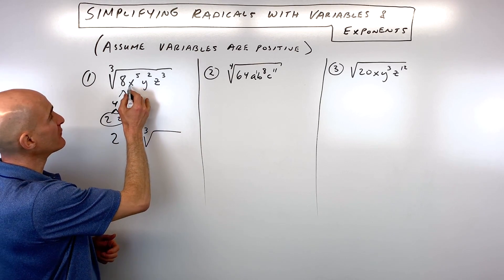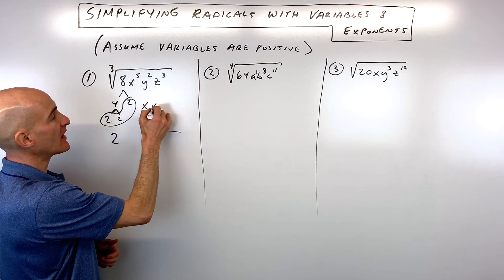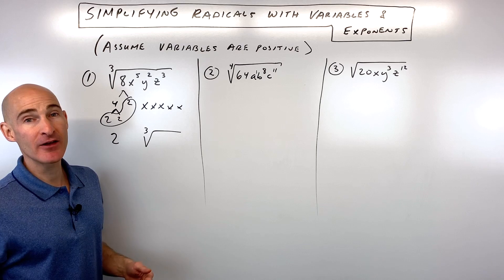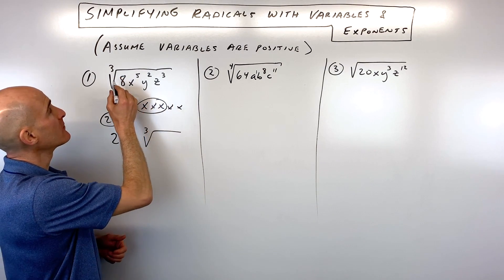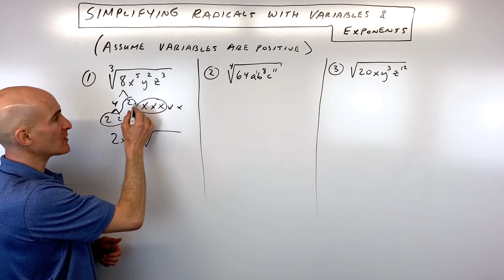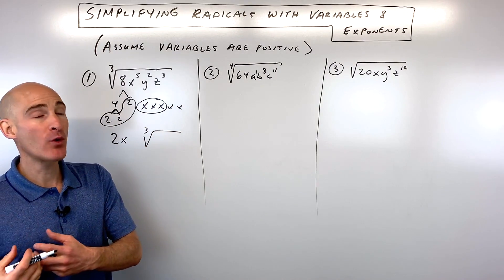And now let's look at the variable. So x to the fifth is really like 5 x's multiplied together. But we're looking for groups of 3 since we're taking the cube root. That's like x cubed. The cube root of x cubed is just x. So for each group of 3, you just get 1 of that quantity.